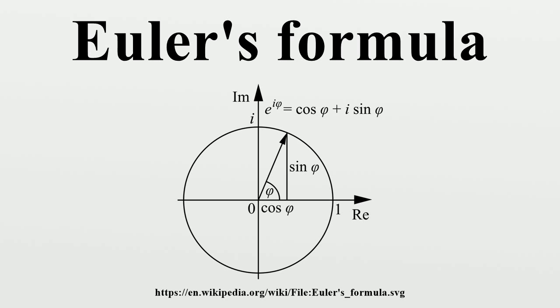Euler's formula states that for any real number x, e^(ix) = cos(x) + i·sin(x), where e is the base of the natural logarithm, i is the imaginary unit, and cos and sin are the trigonometric functions cosine and sine respectively, with the argument x given in radians.